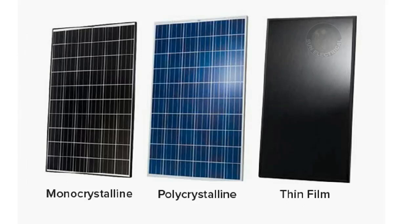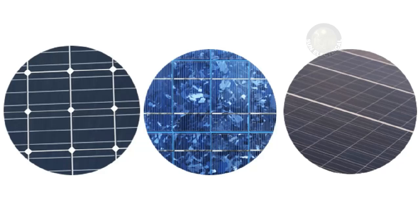For example, monocrystalline solar panels are uniform dark — that means black in color. They have a round shape at the edges — this is the monocrystalline solar panel with its characteristic round cut edges.